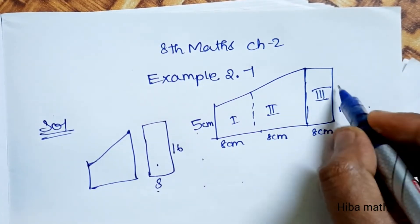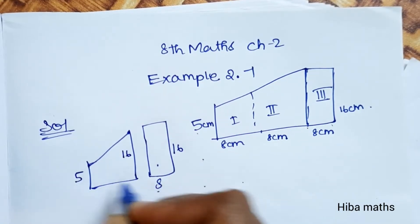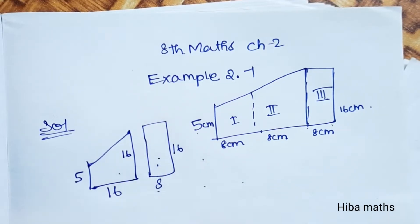The measurements are: this side is 16 and this is 8, this is 16 and this is 16, here is 16 and this is 5. This 8 plus 8 is 16. This is rectangle and these are trapeziums.